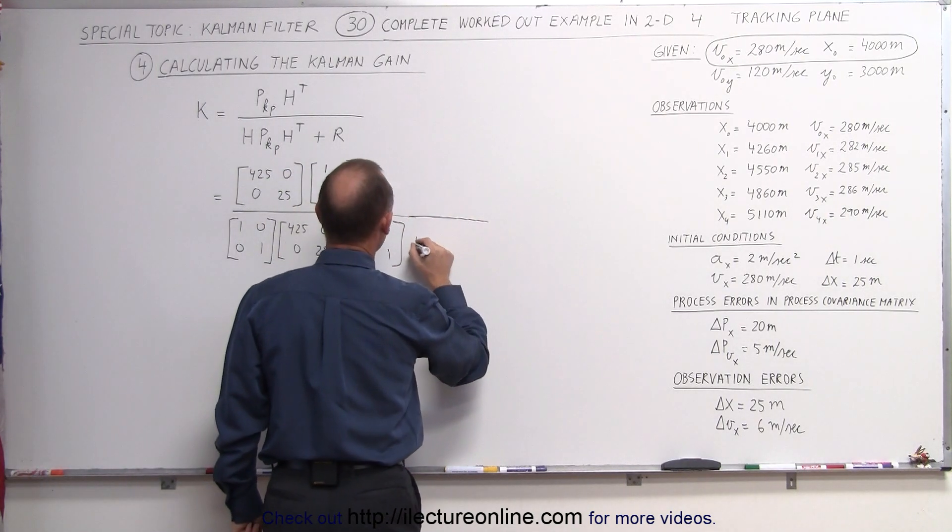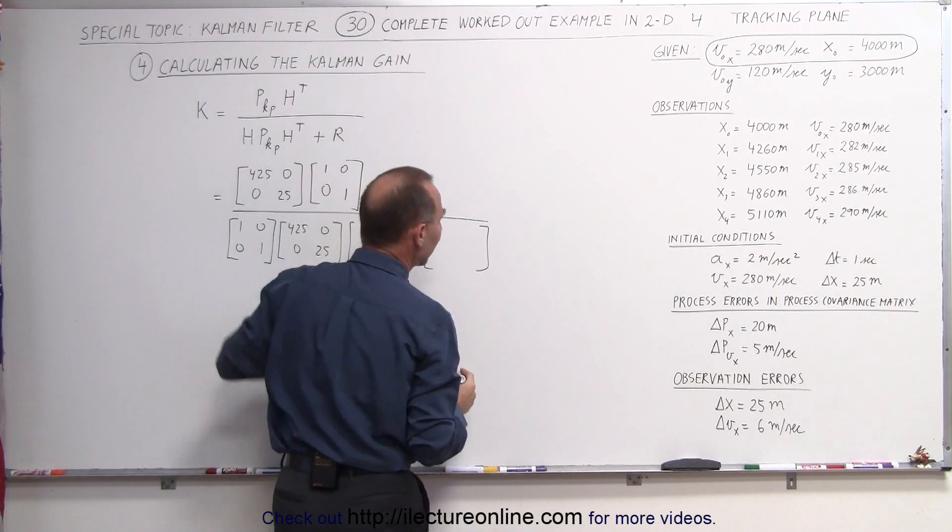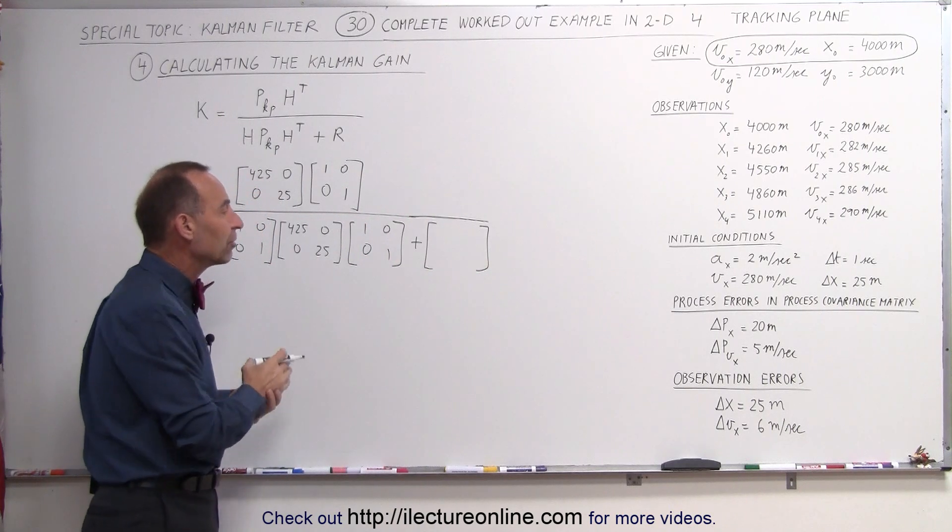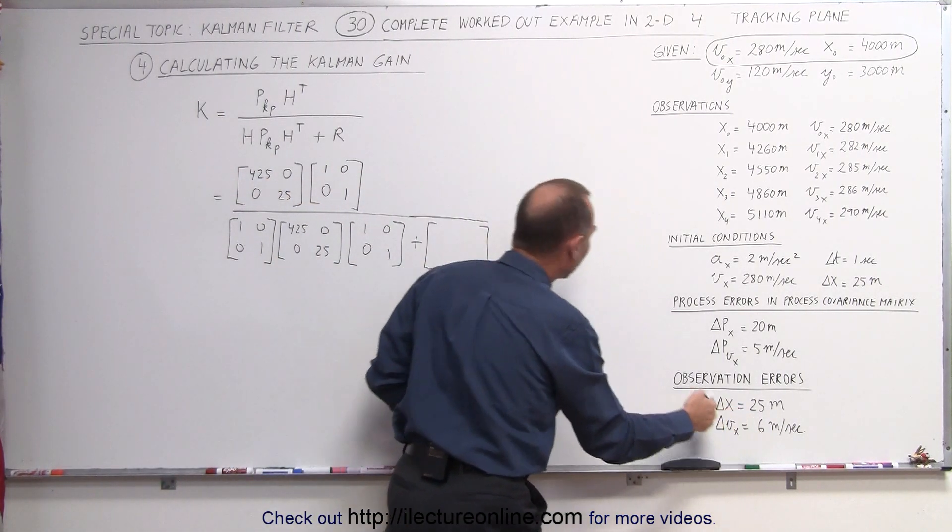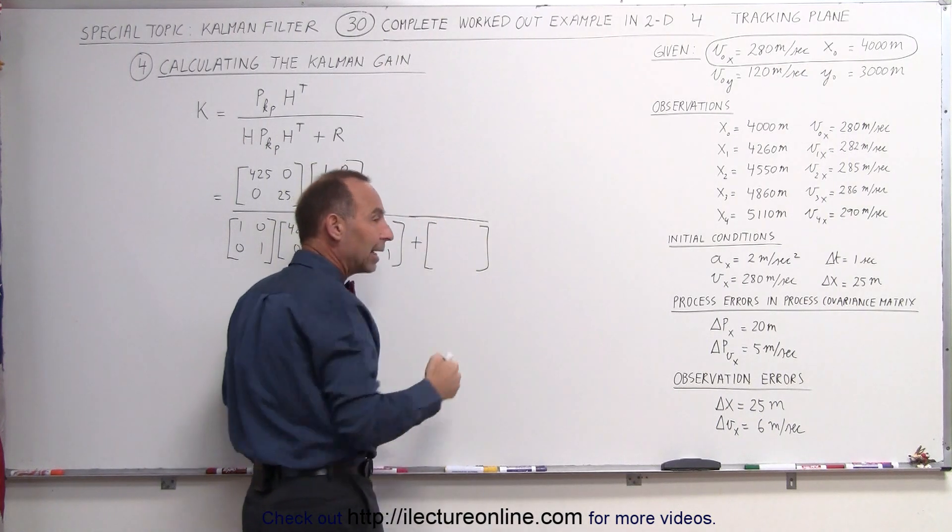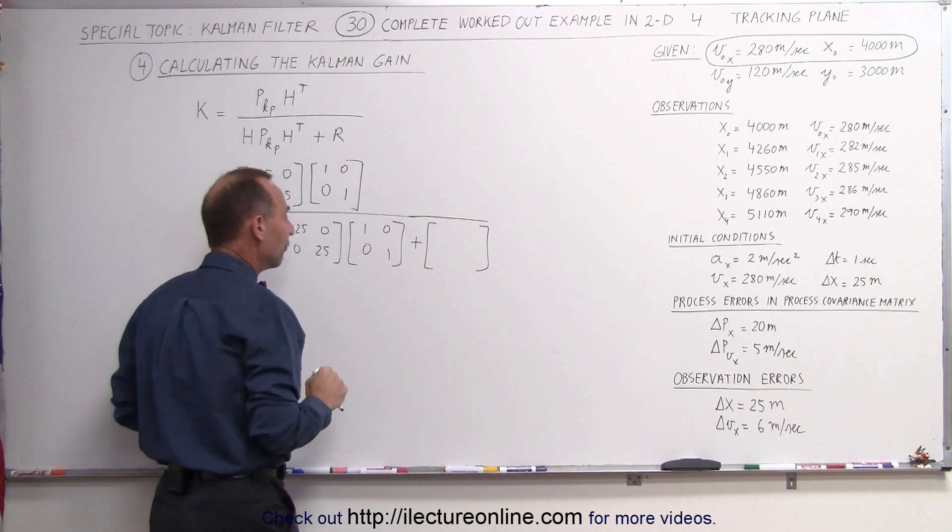And now we have to add to that the R matrix, and we have to have that in the same format as the covariance matrix. So we look at the errors, the errors in position and the errors in velocity. They're going to go on the diagonal line. Of course we have to square it to have it in the same format as the covariance matrix.